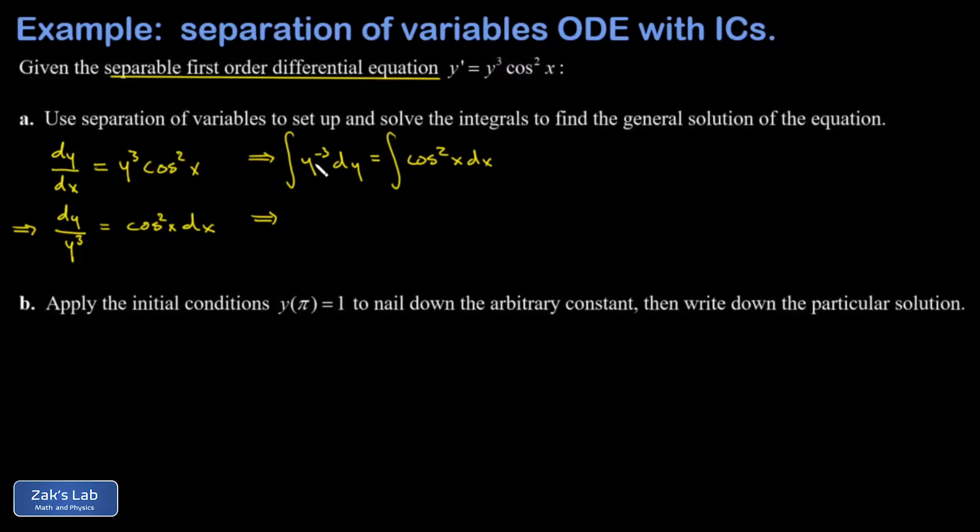For the left hand side, I have y⁻³ so I use the power rule. I add 1 to the exponent and I get y⁻²/(-2), which could be written as -1/(2y²).